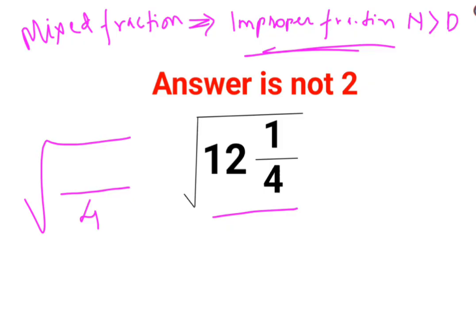There is a major change which happens in the numerator. Now how does that happen? We multiply the integer part with the denominator, which is 12 multiplied by 4, and then you add the numerator, which is plus 1.